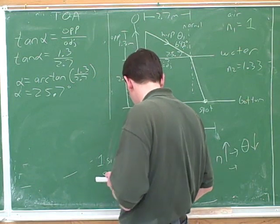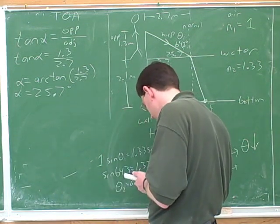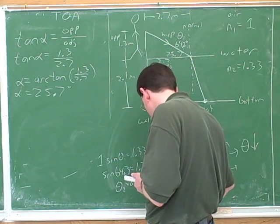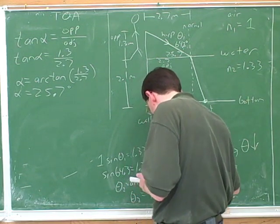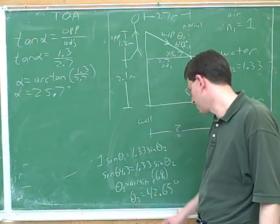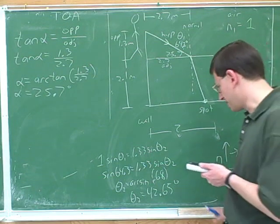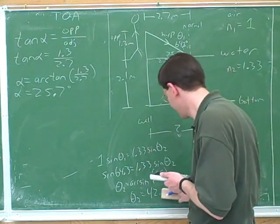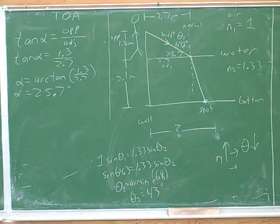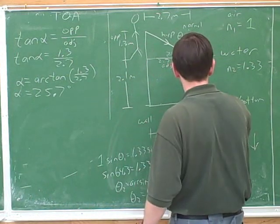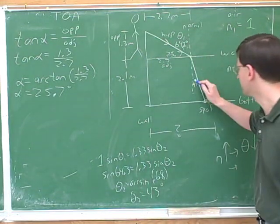Sine of 64.3 divided by 1.33 is about 0.68, and then you take the arc sine to get approximately 42.65 degrees — let's call that 43 degrees. Now let's put that angle back into our picture in the right place. This is our 43 degree angle over here.